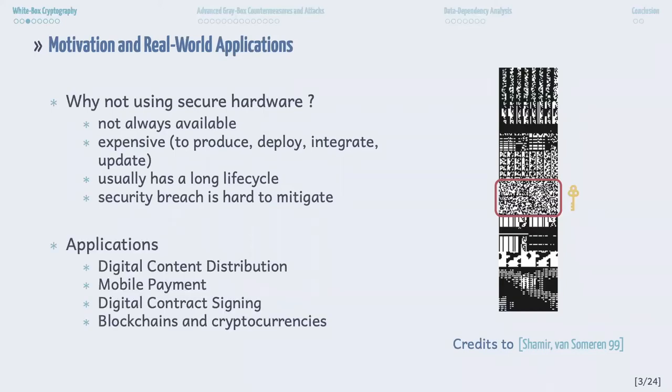In many real-world applications, cryptographic algorithms have to be deployed in pure software. Such applications include digital content distribution, mobile payments, digital contract signing, and blockchain technologies. As illustrated by Shamir and Van Someren, if the key is not protected, it is trivial for the adversary to extract the key from memory since the key looks random. Hence, in these applications, white box crypto is an essential component to protect the security of the system.